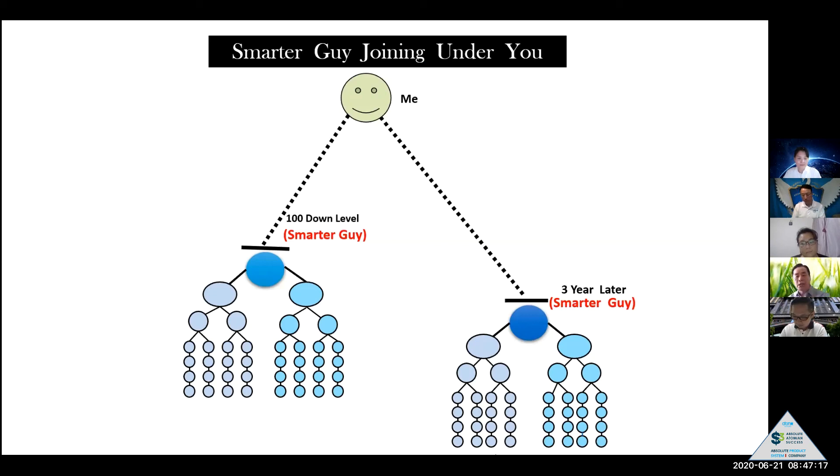Because of binary system, anybody since the last bottom line, they are supposed to be joining. The big guy joining in Mexico, the smart guy joining under you. This is what's going to happen. You are in this power line and the smaller layer can be automatically exchanged and reverse. And you can make a big money.